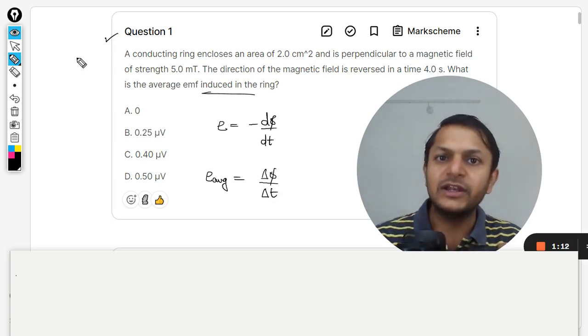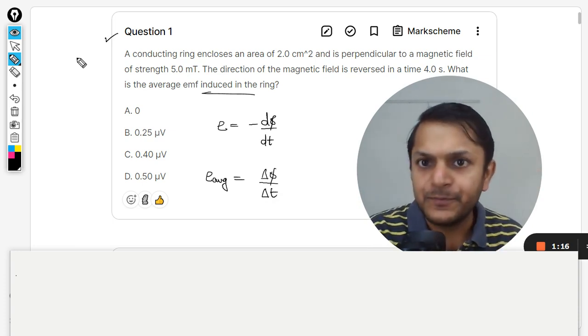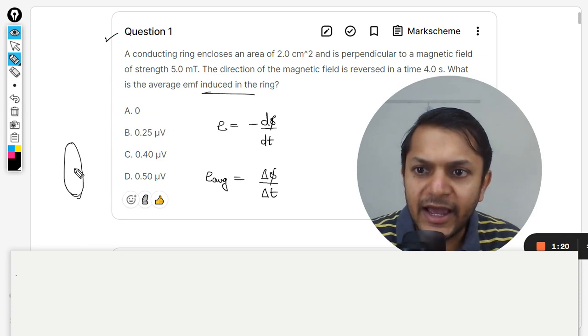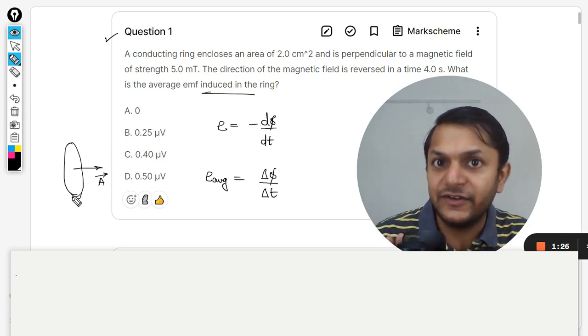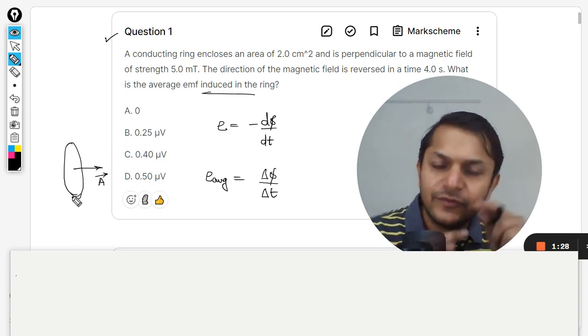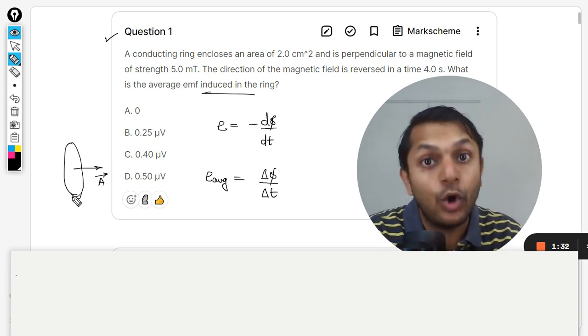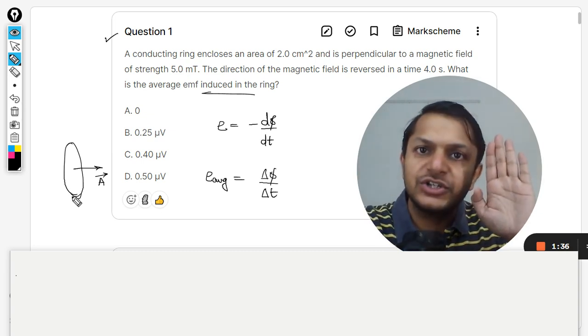So you can say there is this ring and let us say the area vector was this. Well yes, area is a vector if you don't know it. The direction of the area is the direction in which area is watching. Like for example I have this palm now. My palm is watching towards you so the vector of this area is like this, perpendicular to this.